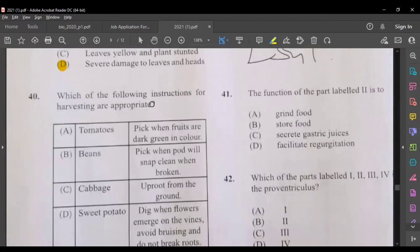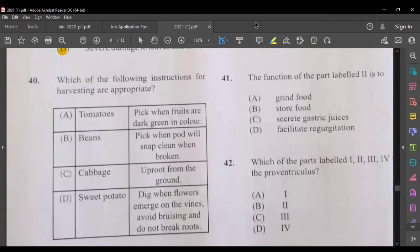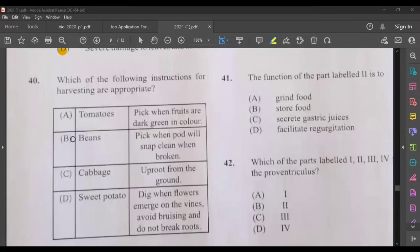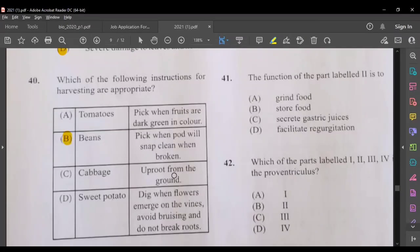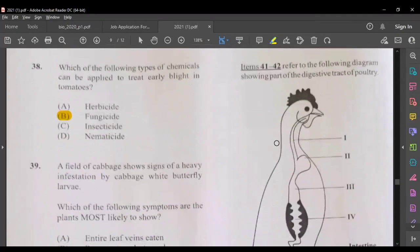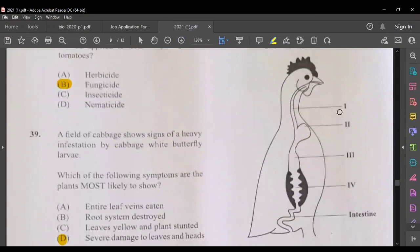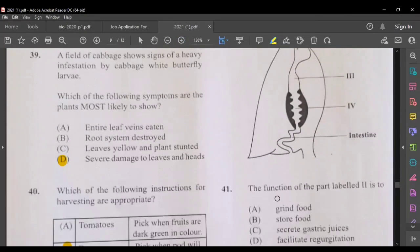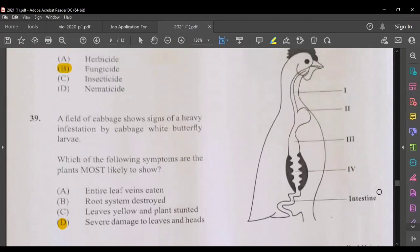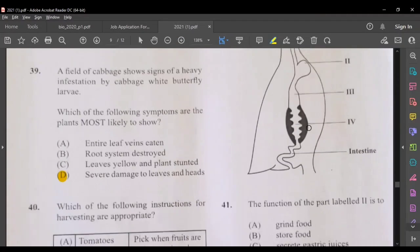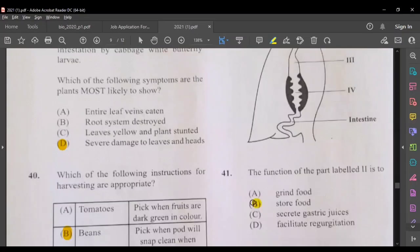Question 40, which of the following instructions for harvesting are appropriate? In my opinion, the most suitable answer here would be B. Question 41-42 refers to this diagram here. We have structures 1 to 4 labeled. We have the intestine. So the function of the part labeled 2, so 1 is the esophagus and 2, that would be the crop. So the function of the crop is to store food.